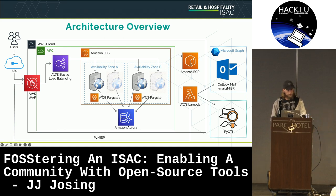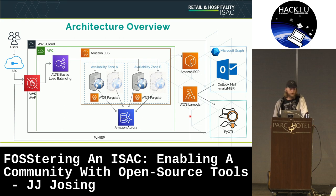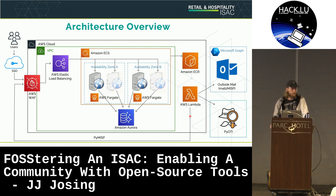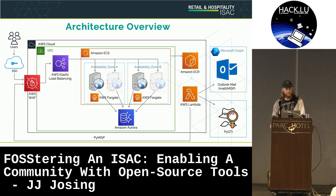On the right-hand side, we use AWS Lambda to run some automation. One function logs into our Microsoft Outlook mailbox to make use of mail-to-MISP. Members that share intel send an email to our MISP inbox, and the Lambda logs in, parses it out, creates MISP events, and pushes them back through the WAF into our instances. The Lambda also runs our Pyote enrichment and vetting.